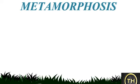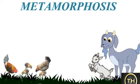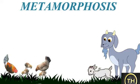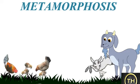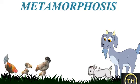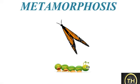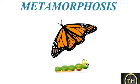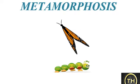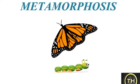Let's learn about metamorphosis. There are similarities between a goat and its kid, and between a hen and her chicks. But a caterpillar and a butterfly are very different. Thus, in some animals, the young one grows into an adult animal that looks very different from the young one.